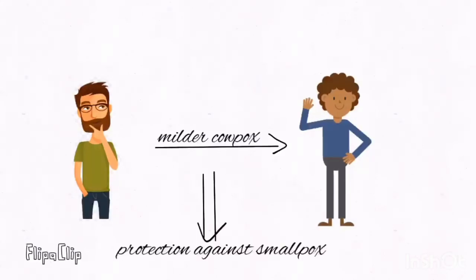To be fair though, he was impressed by the fact that those who recovered from cowpox were immune to smallpox. Thus, Edward Jenner started to hypothesize that purposely transferring the milder cowpox from person to person could protect against smallpox.